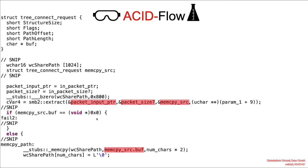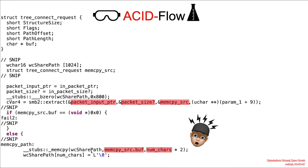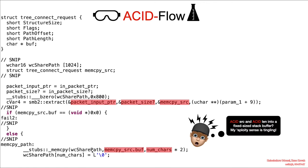Eventually, the buffer specified from the attacker-controlled packet will be written to the WC share path variable, which resides on the stack.